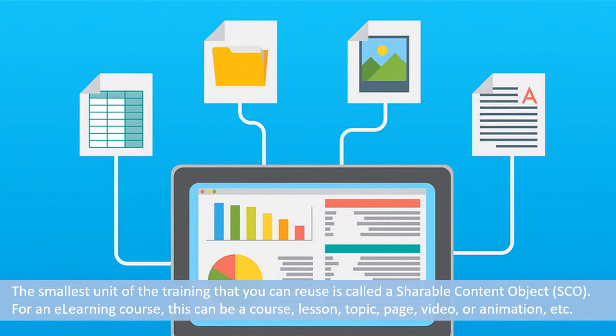SCORM compliant courses allow you to reuse some parts of the training. The smallest unit of the training that you can reuse is called a Shareable Content Object, or SCO in short. For an e-learning course, this can be a course, lesson, topic, page, video, or animation, etc.